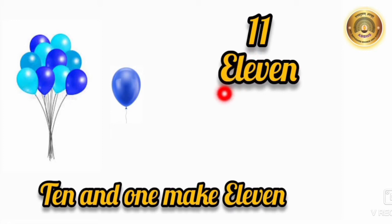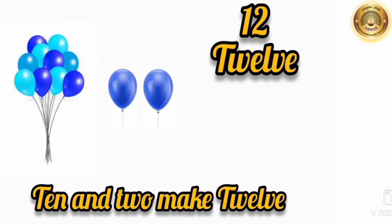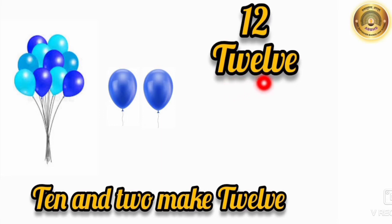Let's see the spelling of 11: E-L-E-V-E-N. 11. Let's see the next number. Here we can see 1 ten and 2 balloons. So 10 and 2 make 12. The next number is 12. Let's see the spelling of 12: T-W-E-L-V-E. 12.